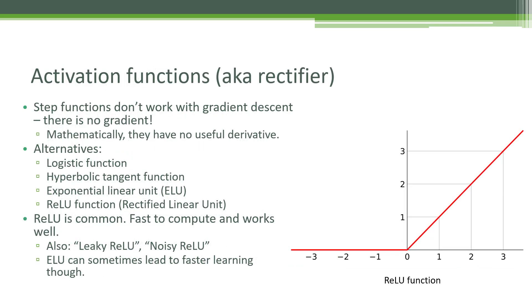We should talk a little bit about activation functions. In our previous exercise using the TensorFlow Playground, we were using the hyperbolic tangent activation function by default, and then we switched to something called ReLU, and we saw that the results were a little bit better. The activation function is just the function that determines the output of a neuron given the sum of its inputs. You take the sum of all the weights of the inputs coming into a neuron, and the activation function takes that sum and turns it into an output signal.